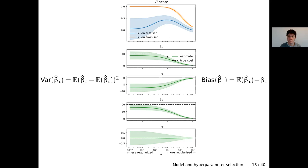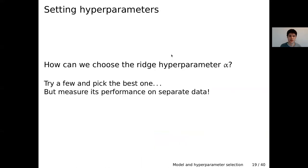There is a sweet spot: a good value of the regularization hyperparameter alpha that gives not too much bias but also not too much variance, allowing the best possible generalization. The question is how do we find this good value of alpha — how do we select this regularization hyperparameter? The simplest solution is a grid search: try several values of alpha, evaluate the model on some validation data, and find this sweet spot.